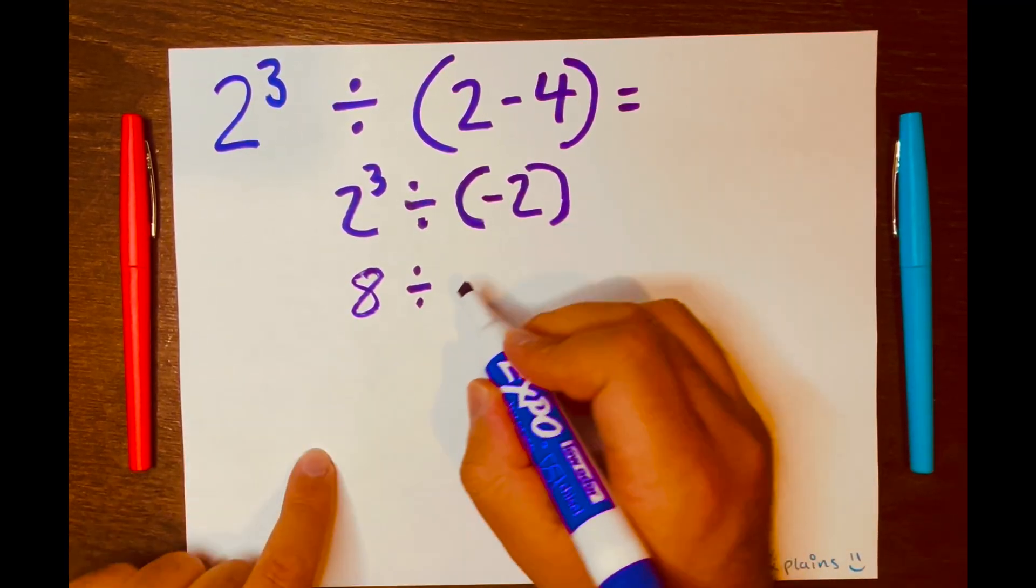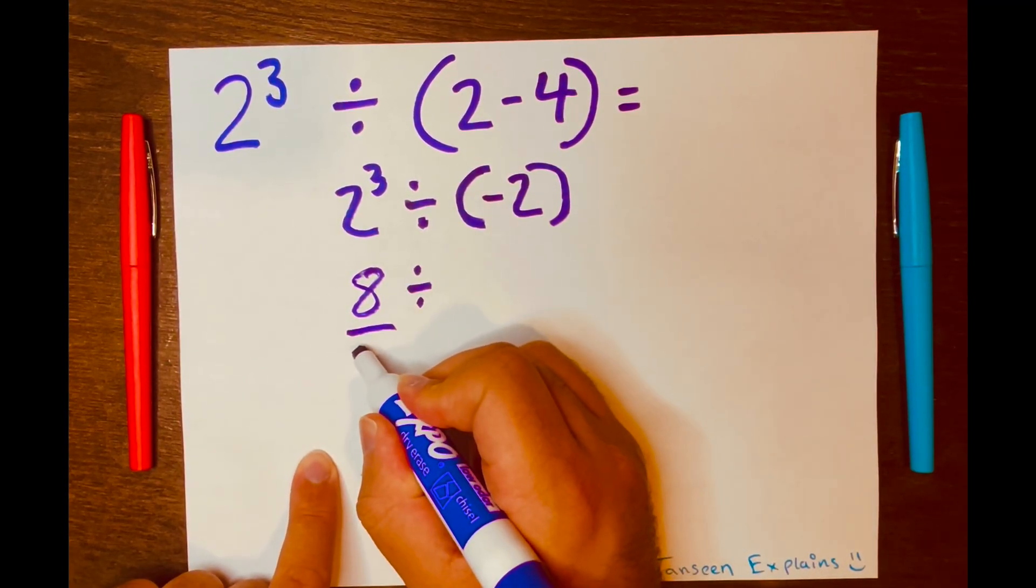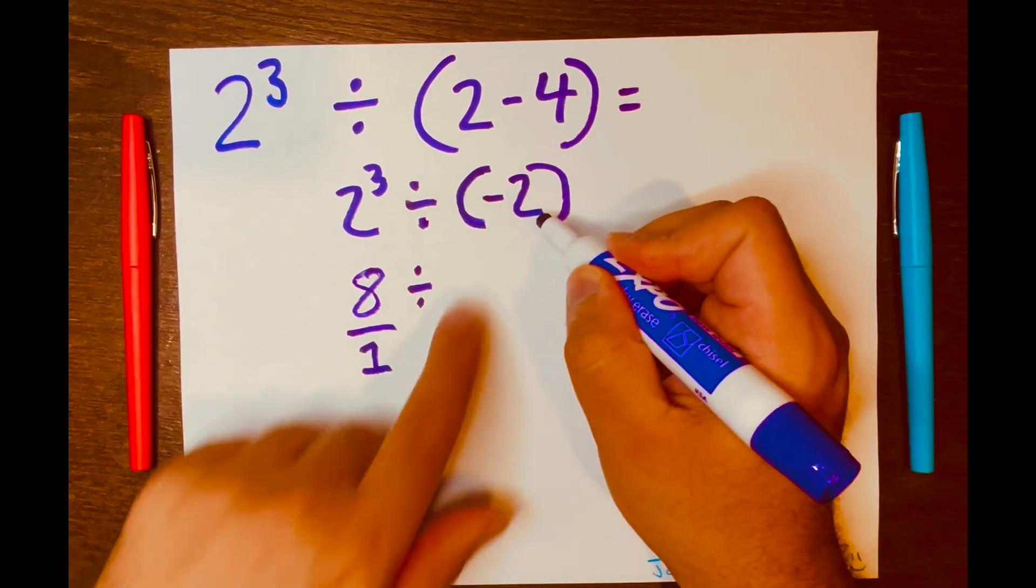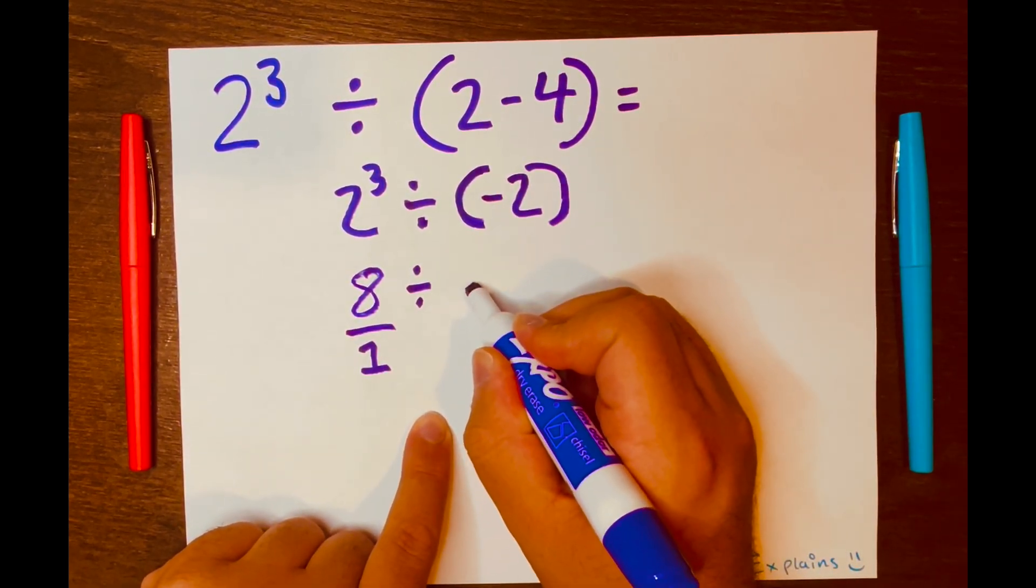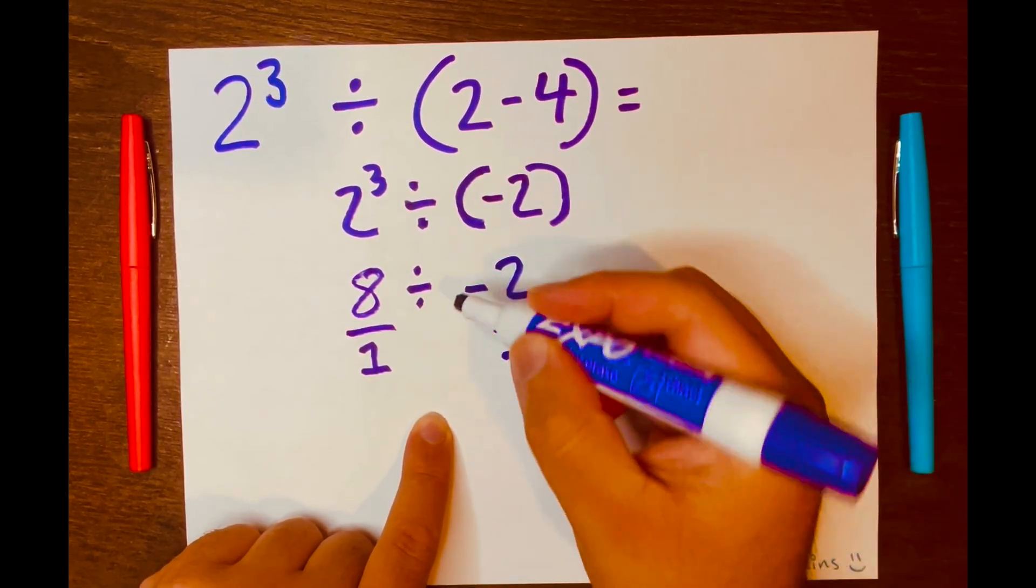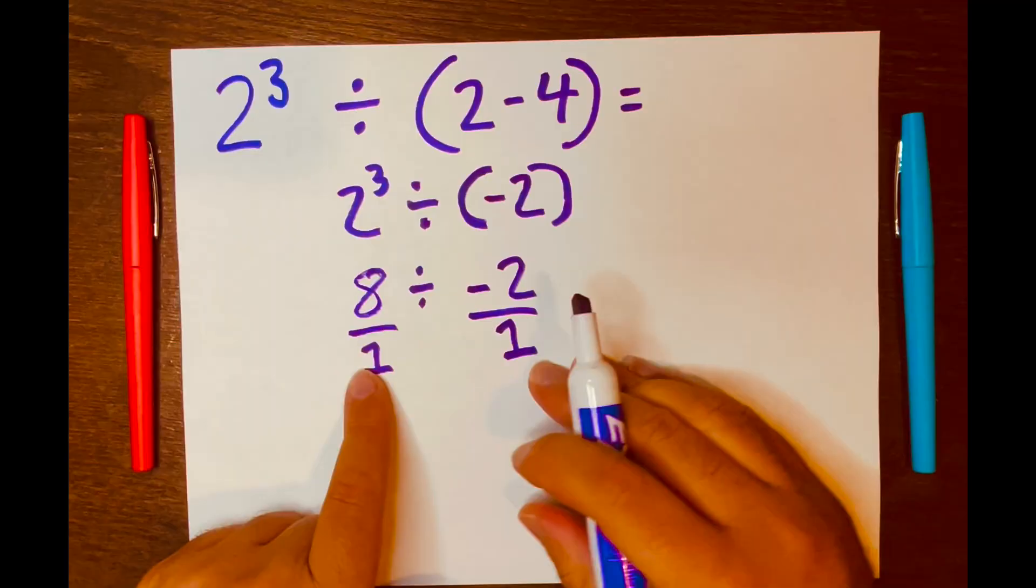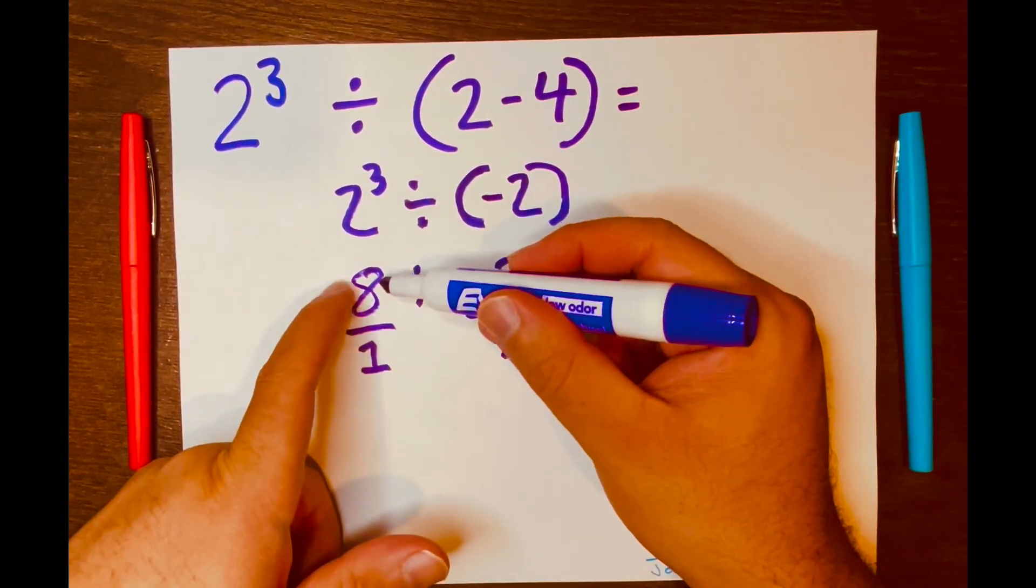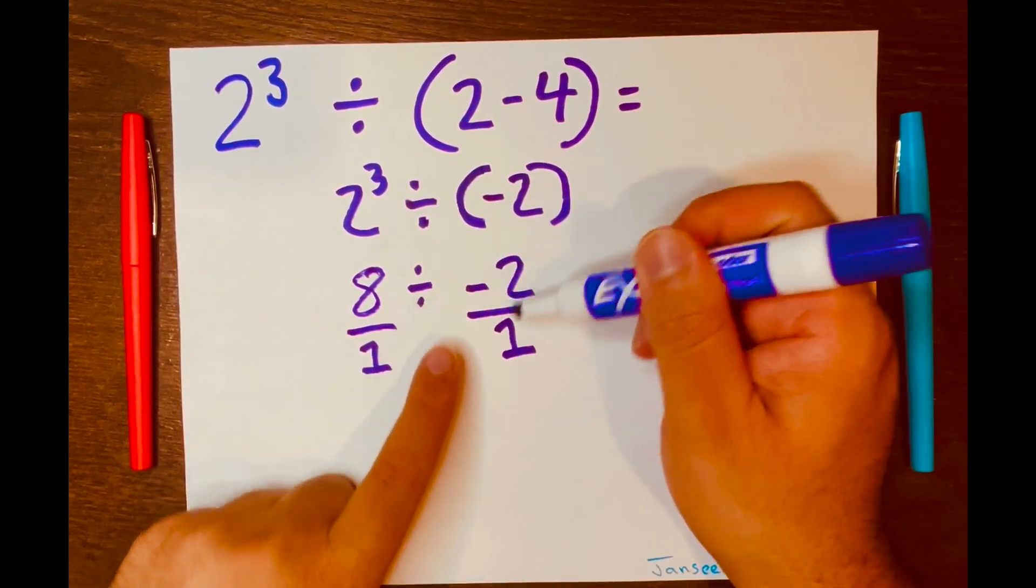I want to turn the 8 into a fraction, because we're going to use that keep-change-flip method. And then I'm going to make the negative 2 into a fraction as well. So negative 2 over 1. And now we have 8 over 1 divided by negative 2 over 1.